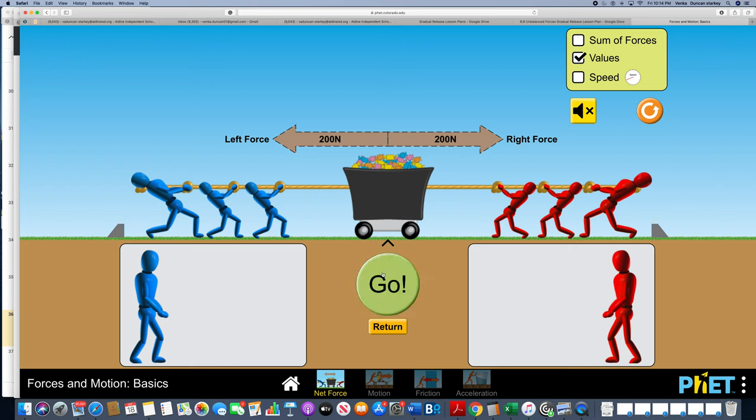There is an equal amount of force pulling on either side of the tug-of-war line. 200 newtons of force to the left, 200 newtons of force to the right. These two forces cancel each other out, causing the tug-of-war line not to move. This is an example of a balanced force. Now you try.